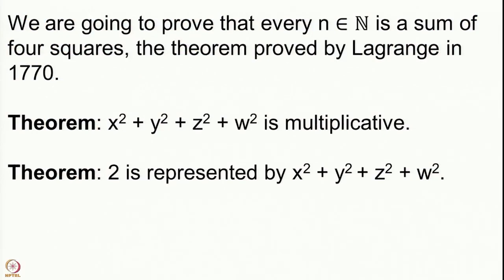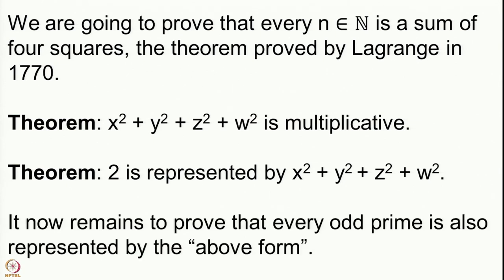After proving that this form is multiplicative, we only need to prove that every prime can be written in this way — that every prime is represented by this form. We start with the first prime p=2, and we saw in the last lecture that 2 is represented by this form: 2 = 1²+1²+0²+0². Now the only thing that remains to prove is that every odd prime is also represented by the above form.